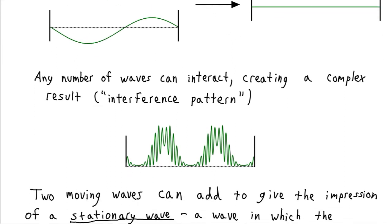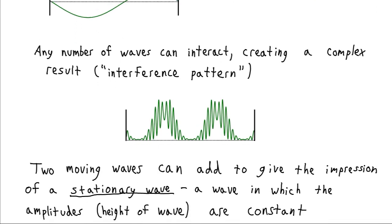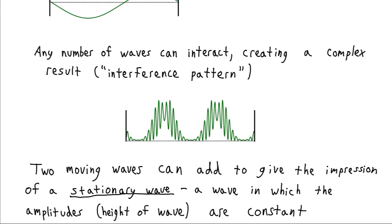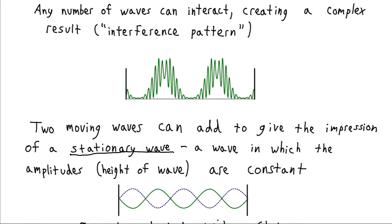Another interesting phenomenon is if we have two waves of equal amplitudes adding together, they can give the impression of a wave that's not moving. And so for example, if you have a guitar string, you might notice when you pluck the guitar string you get a picture kind of like this.